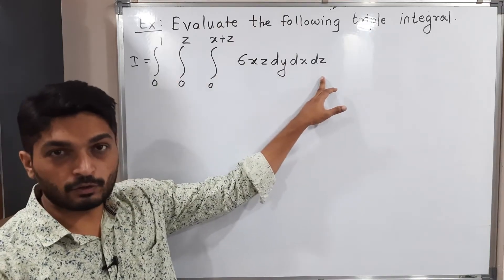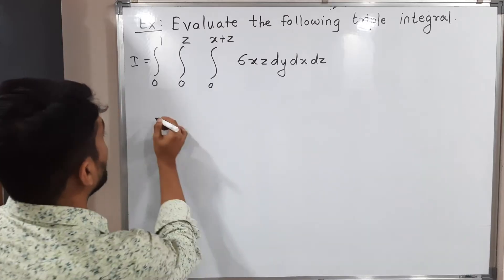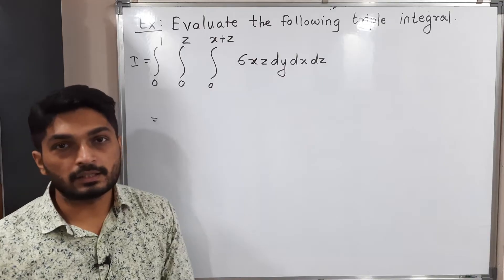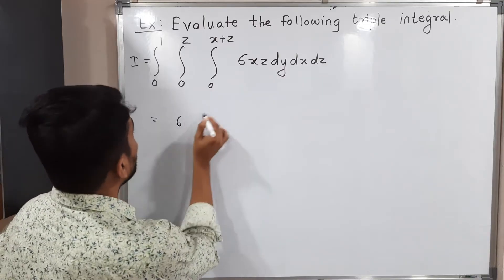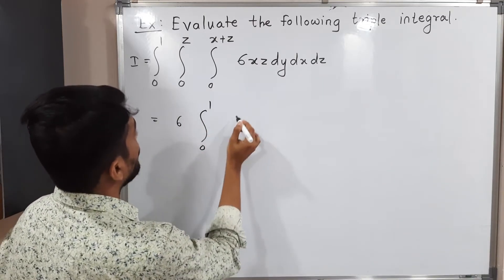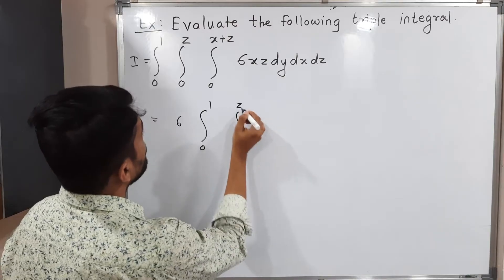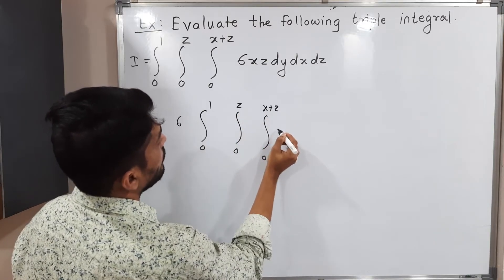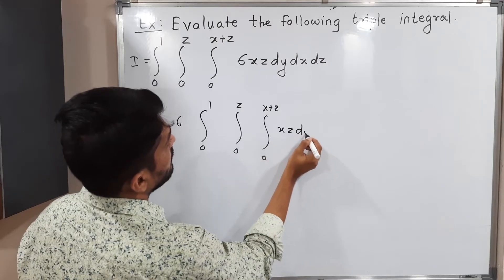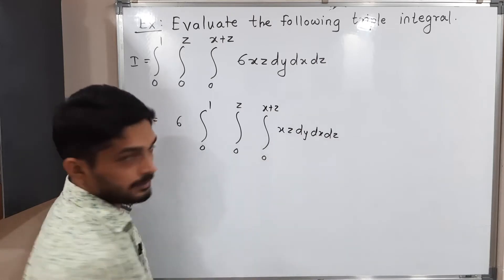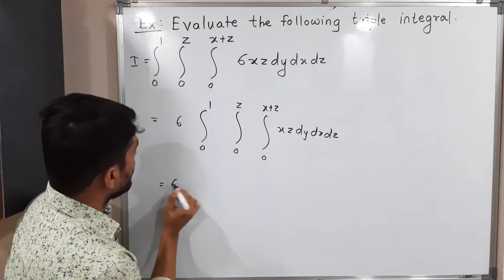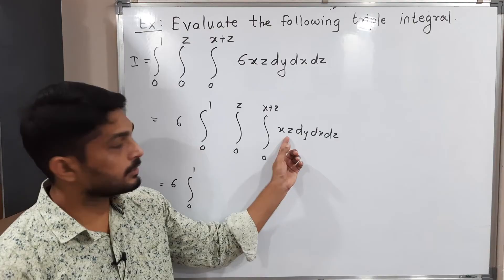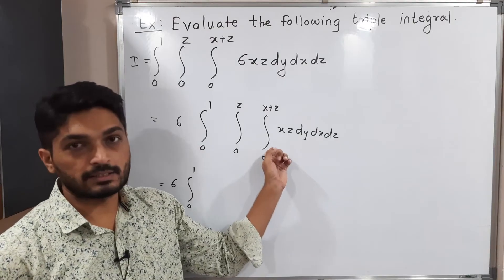Let us start solving this example. The 6 is a constant, so we can take it outside the integral and write: 6 times the integration from 0 to 1, integration 0 to z, integration 0 to x plus z of xz dy dx dz. This equals 6 integration from 0 to 1 — now, since the inner integration is with respect to y, z is a constant for the inner integral.